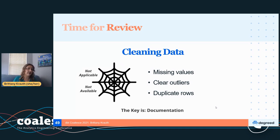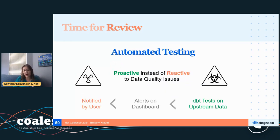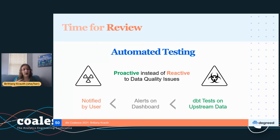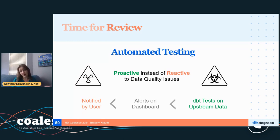Something an analyst is probably not as familiar with is taking testing and getting it automated — moving from reactive to proactive on data quality issues. Most of the time I'm notified a dashboard has an issue by a user saying, hey, I tried to pull this and it didn't work. In our BI tool, we can add alerts on dashboards — we'd know at 9 a.m. when the dashboard refresh fails. But once we moved into analytics engineering, we said wait — DBT tests are even better. Now we're upstream. I know at 1 a.m. if the data doesn't load, so we can identify issues long before users ever know.